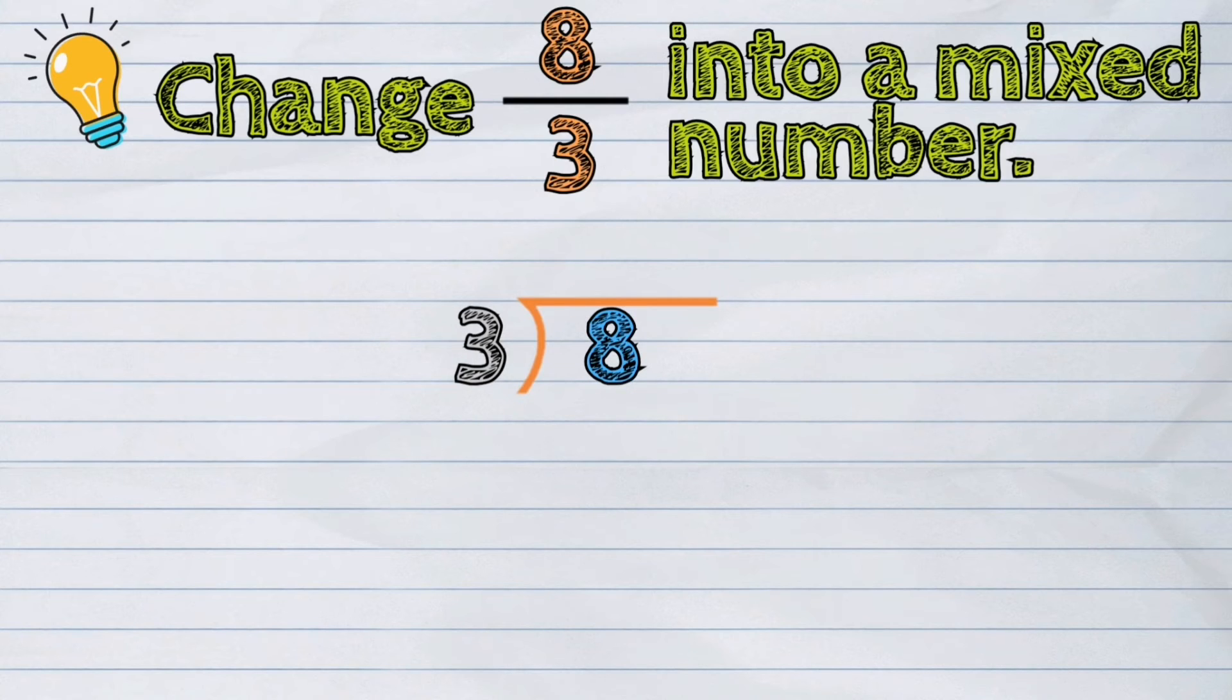So 8 divided by 3, the answer is 2. And then let's continue the process. 2 times 3 is 6. Then 8 minus 6 is 2. 2 here is already our remainder.